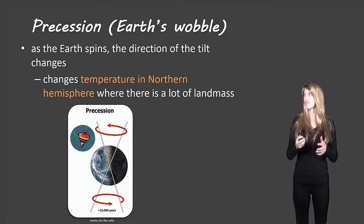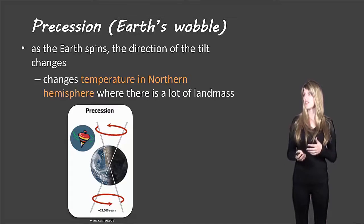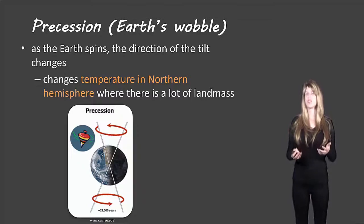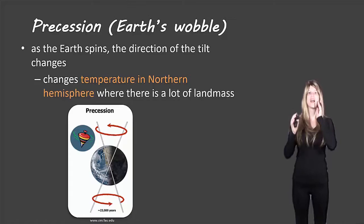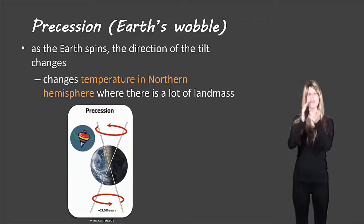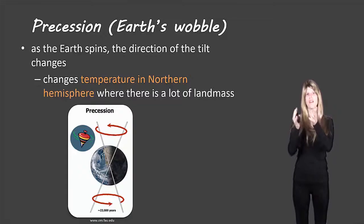As the Earth spins, the direction of the tilt changes. Changes in temperature in the northern hemisphere, where there's a lot of land mass above the equator, mean that as the Earth wobbles as it goes around, that's going to cause changes overall on Earth.